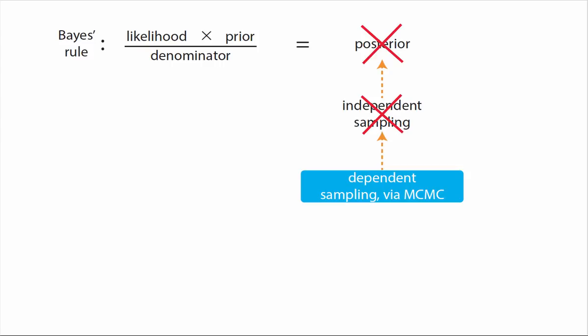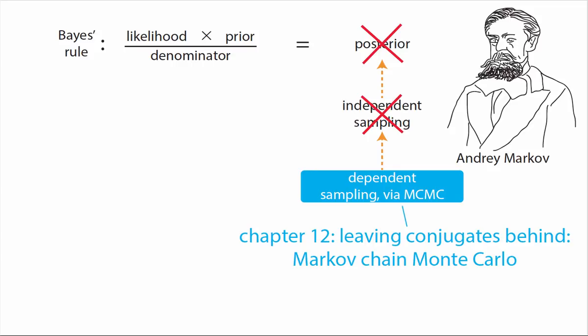So what can we do? It turns out we can do dependent sampling, and the most predominant method of doing dependent sampling is via Markov chain Monte Carlo. We discuss Markov chain Monte Carlo in detail in chapter 12.